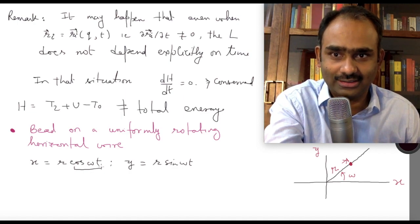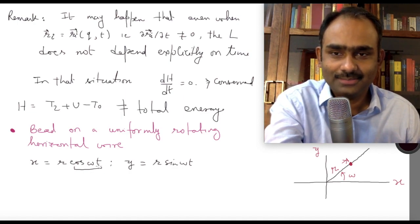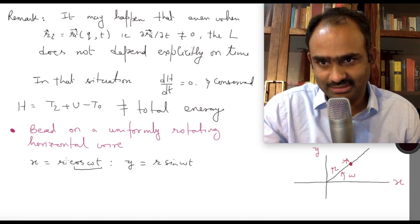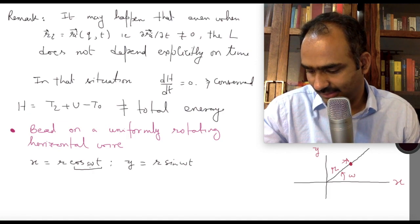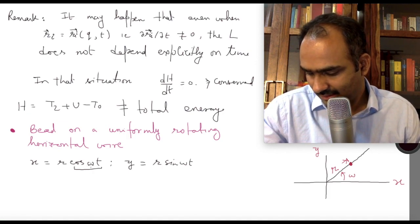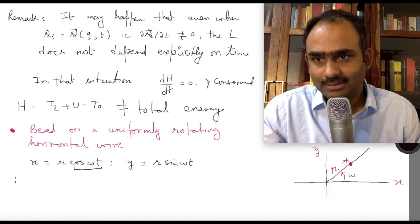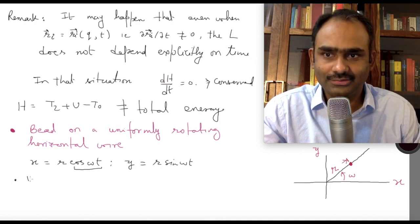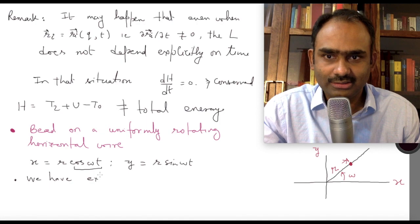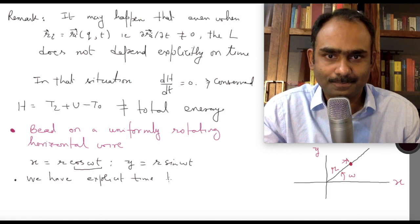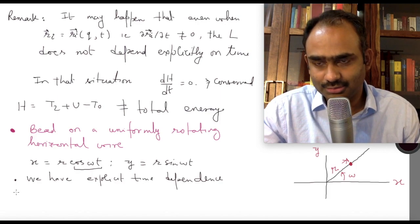There is only one coordinate left, which is r. Notice there is an explicit time dependence in the transformation from r to the generalized coordinate, since there is a factor of cos(ωt). So we have explicit time dependence in the transformation from r to q.